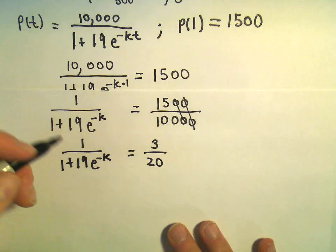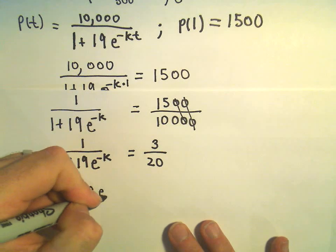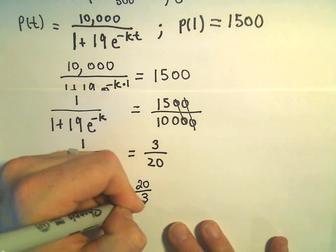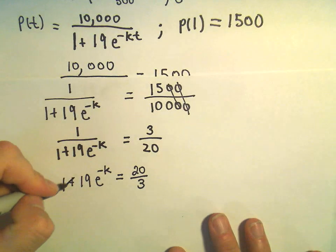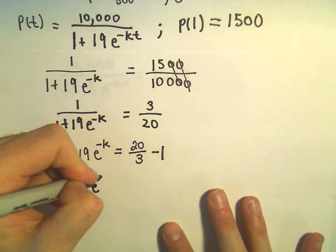And what I'm going to do now is just flip both fractions. So we'll have 1 plus 19 e to the negative k equals 20 over 3. Well, we can subtract 1 from both sides. That would leave me with 19 e to the negative k.